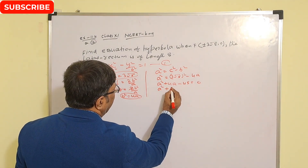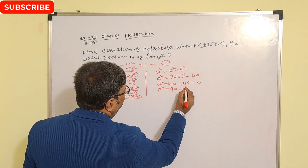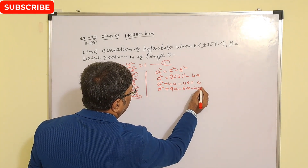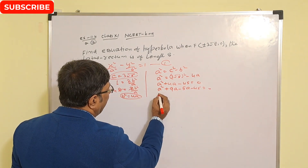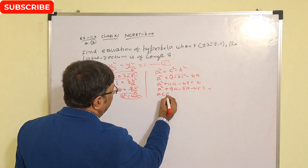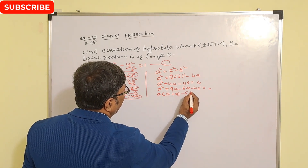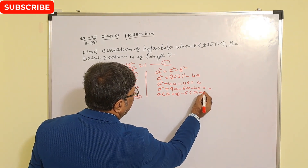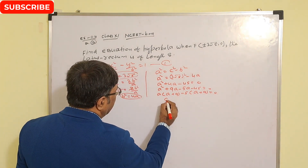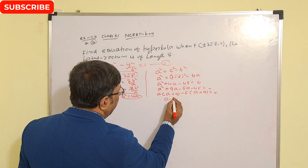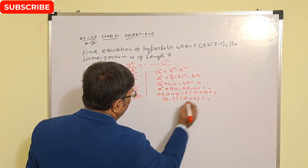Rearranging: a² + 4a − 45 = 0. Factorizing this quadratic, we look for factors and get (a − 5)(a + 9) = 0.